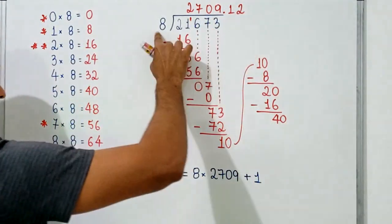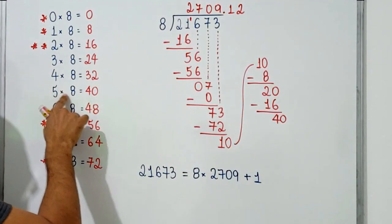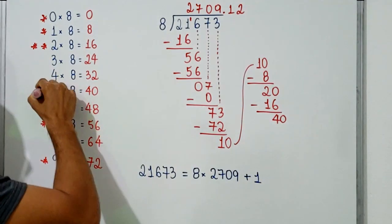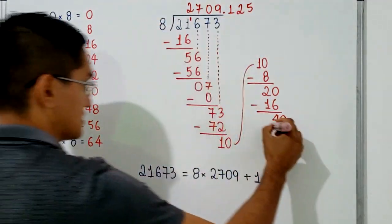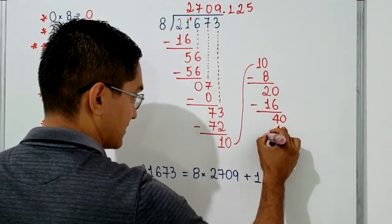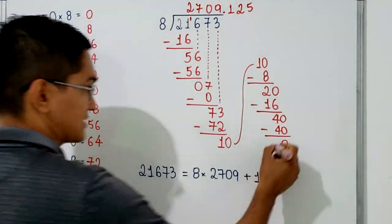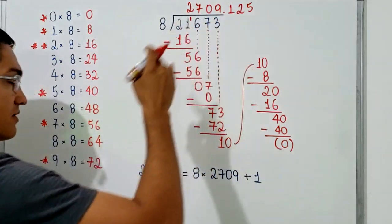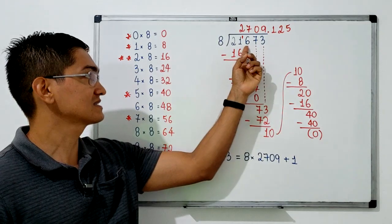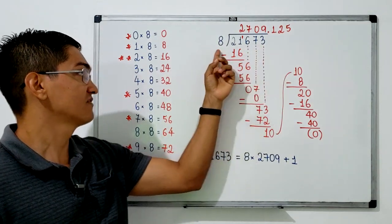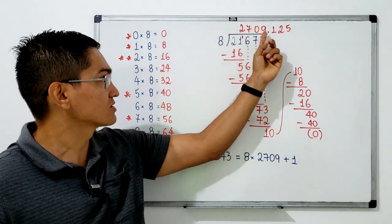I bring down another zero, giving us 40. How many times does 8 go into 40 without going over? 5 times 8 equals 40, so 5 is the number. I write 5, subtract 40 minus 40 equals 0. Since nothing is left over and there are no more digits, this is over. 21,673 divided by 8 equals exactly 2,709.125.